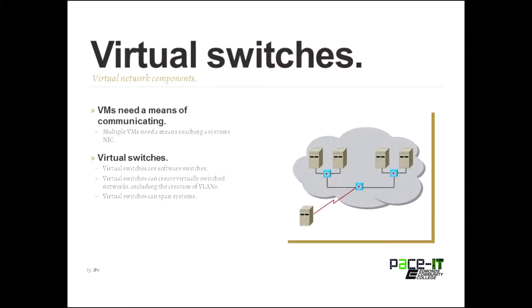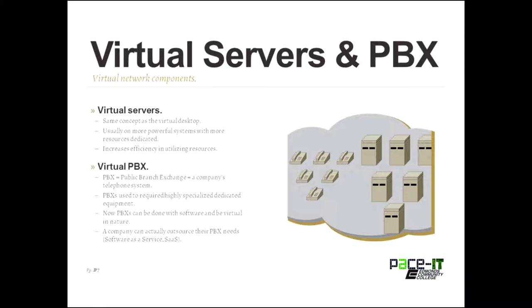Now let's move on to more components of the virtual environment, starting with virtual switches. If you're running multiple VMs, you need a means for them to communicate together or reach the outside world. You can do that using a virtual switch. Virtual switches are software switches that can be linked together, allowing you to create virtual LANs. You can even make your virtual switches span systems — a virtual switch in one location can connect to one in another location over a tunnel.